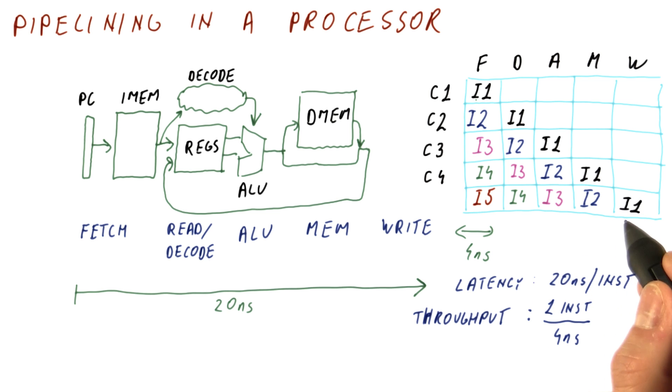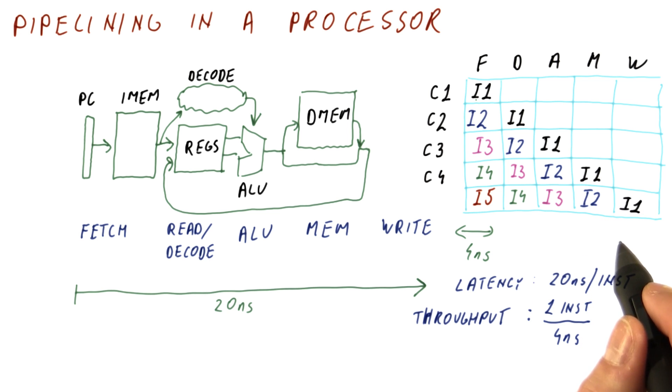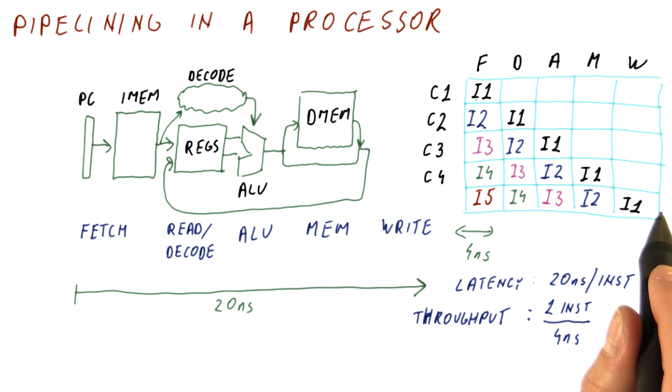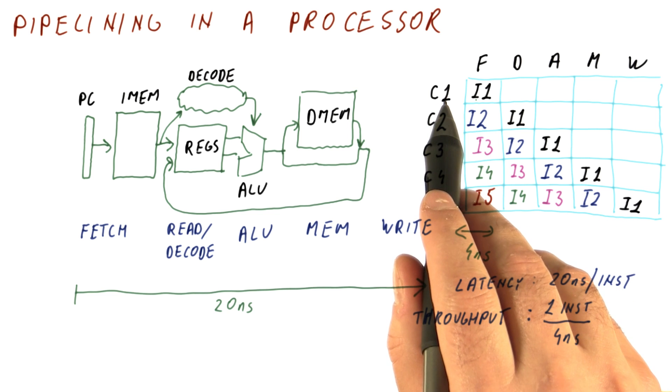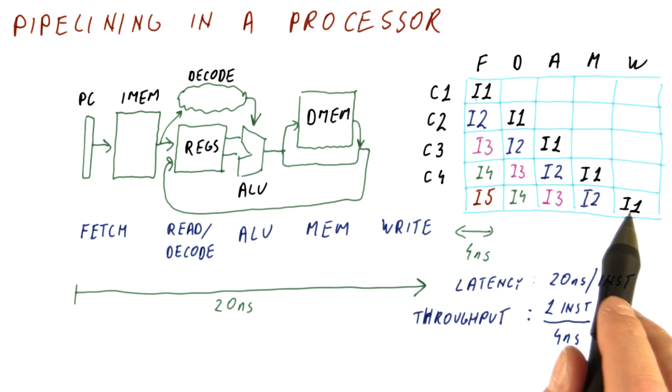Because once I1 leaves, that's how long it takes for I2 to leave, and then we just keep pouring instructions out. It's similar to the oil pipeline: it takes a while to fill the pipeline, but once we do, instructions keep pouring out at a very high rate.